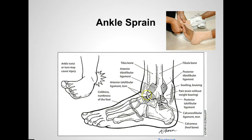If the anterior talofibular ligament is torn, the next one that tends to be torn in order would be the calcaneal fibular ligament. Those are the two that give your body the support, and if you keep rolling the ankle outward, you could also break one of the bones in the ankle. So an ankle sprain needs to first be determined whether it's a break or just a sprain.